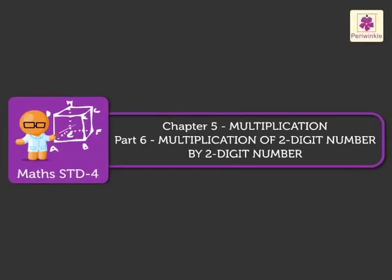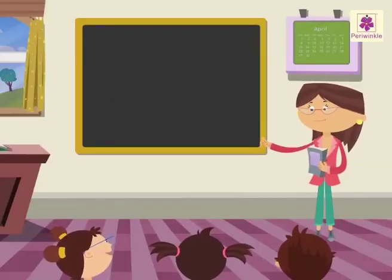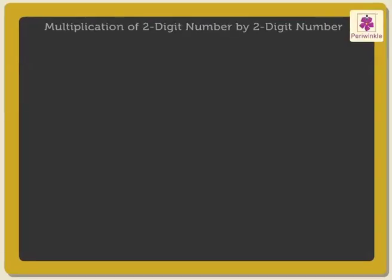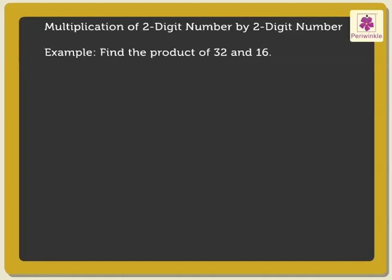Multiplication of two-digit number by two-digit number. Today, let us learn multiplication of a two-digit number by a two-digit number. Let us find out the product of 32 and 16. We can divide the process into three steps.